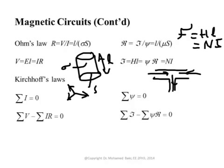In Kirchhoff's voltage law, the sum of the voltage sources around the loop minus the sum of I times R for every branch is equal to zero. The same thing happens for magnetic circuits: the sum of the magnetomotive forces equals the summation of flux multiplied by the reluctance for each branch. So there is an equivalent magnetic voltage drop across every element in the circuit. This covers all the terms we need to know about magnetic circuits.